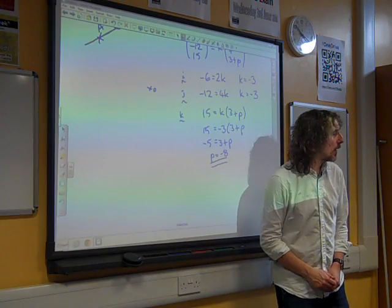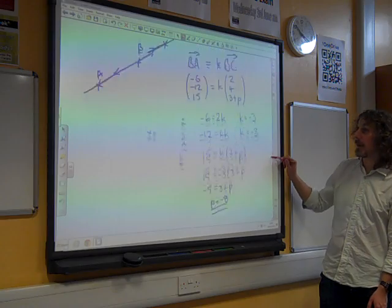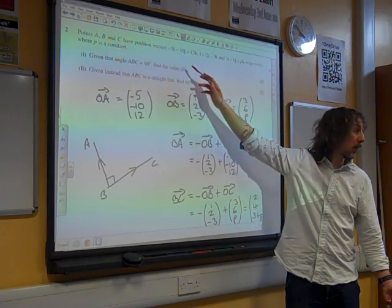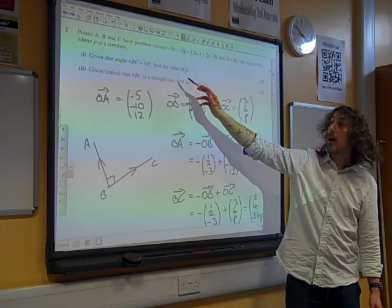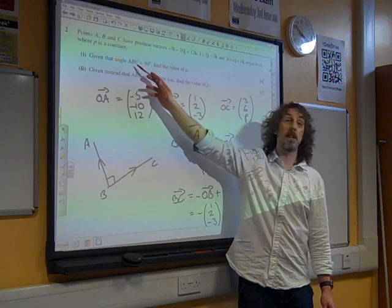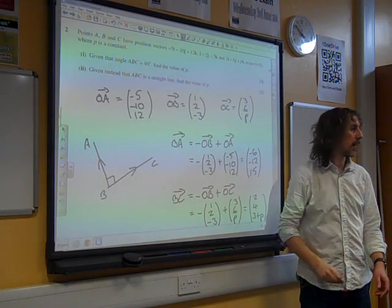You've got P to be 1 again. We did, but it's different. So it was, it said find the value of P here, and P was equal to 1, and then it said, given instead that ABC is a straight line, so instead of being a right angle, you're in a straight line, which implies that we've got a different value. Yes, Matthew?